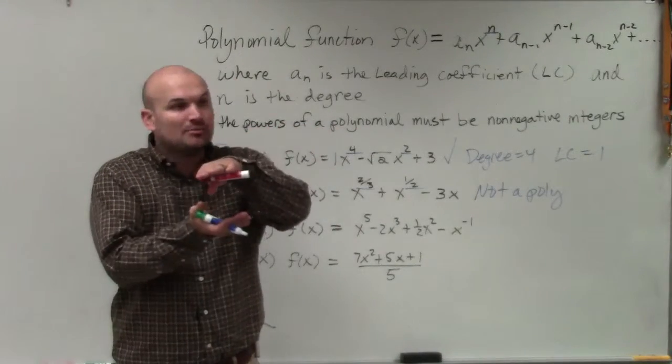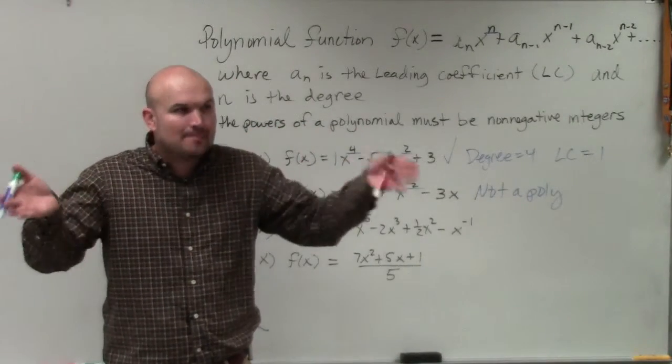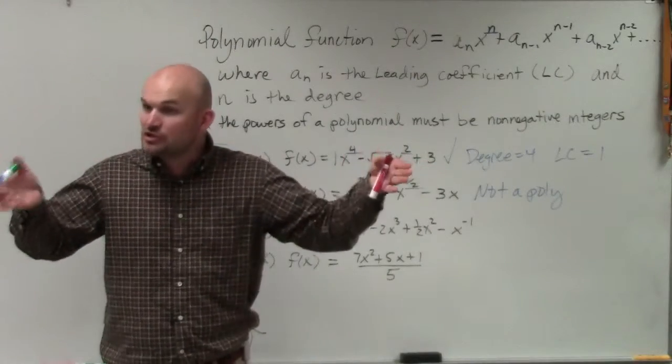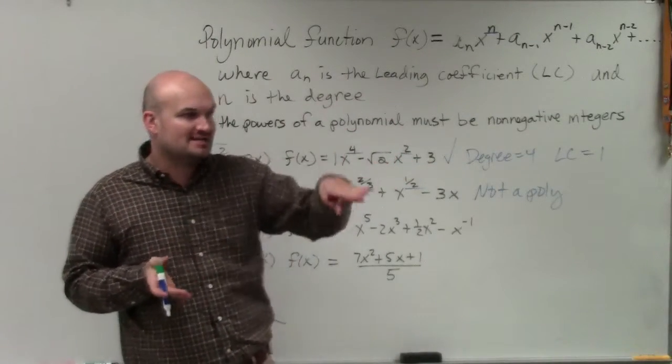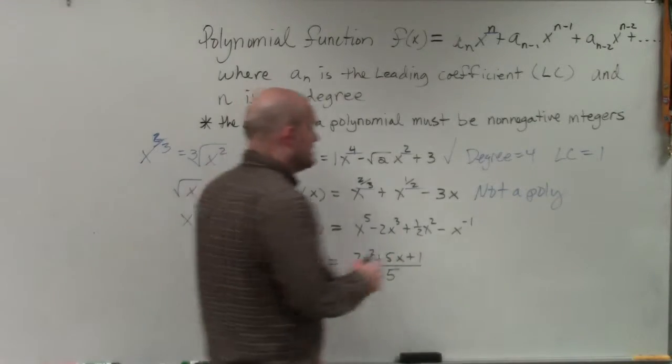So rational functions, where you had a polynomial up top and a polynomial down below, is not actually a polynomial of itself. It's a function. But you can't have polynomials in the numerator and the denominator. So this one is not a polynomial.